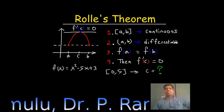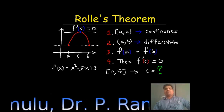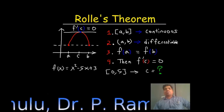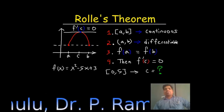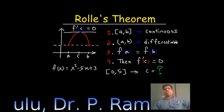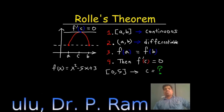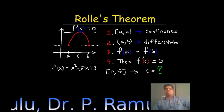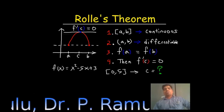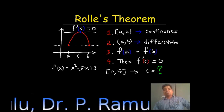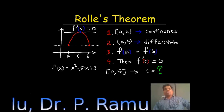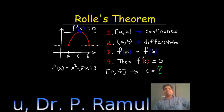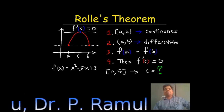To observe here: if the given function f is continuous on closed interval [a, b] and differentiable on open interval (a, b), then there exists a point C between a and b such that f'(C) equals 0.